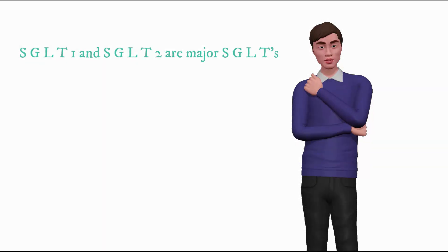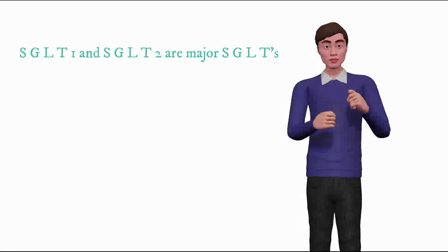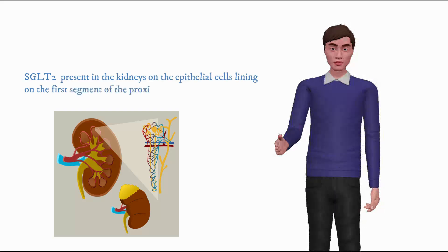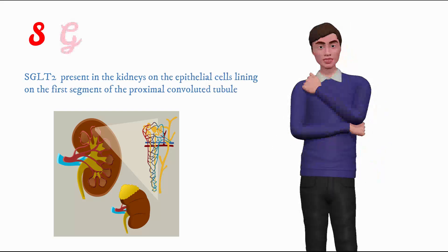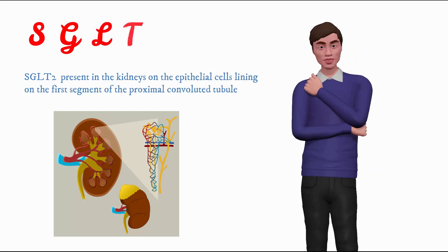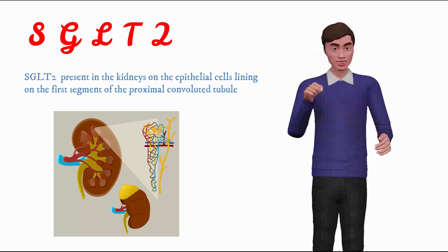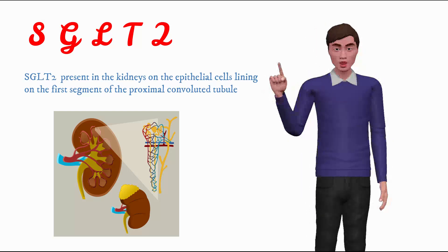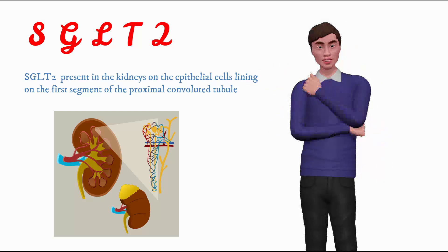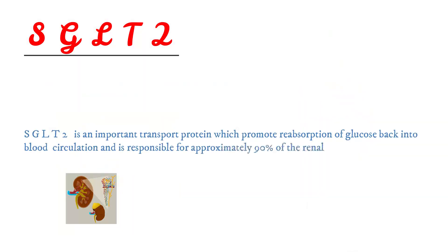SGLT1 and SGLT2 are the major SGLTs. SGLT2 is present in the kidneys on the epithelial cells lining the first segment of the proximal convoluted tubule. SGLT2 is an important transport protein that promotes reabsorption of glucose back into blood circulation and is responsible for approximately 90% of renal glucose reabsorption.